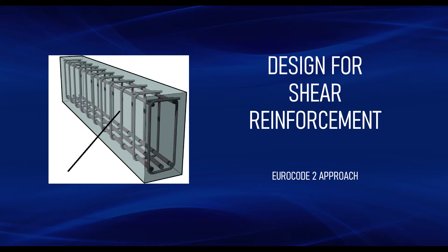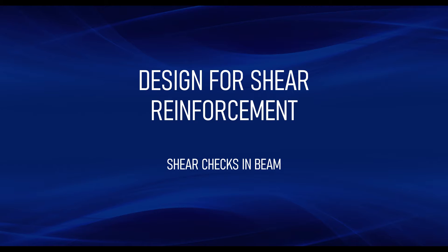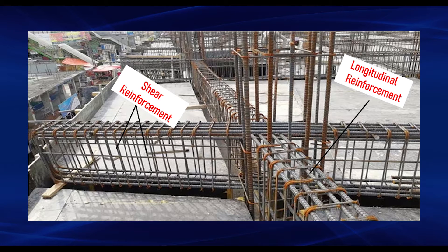Welcome back to this channel. In today's video we are going to be looking at the design for shear reinforcement based on the Eurocode. Shear reinforcement is regarded as the vertical reinforcement in a beam that is provided mainly to resist shear stresses. Another purpose of shear reinforcement is to hold in place the longitudinal reinforcement, which resists bending moment. Shear reinforcement are also referred to as shear links or stirrups.